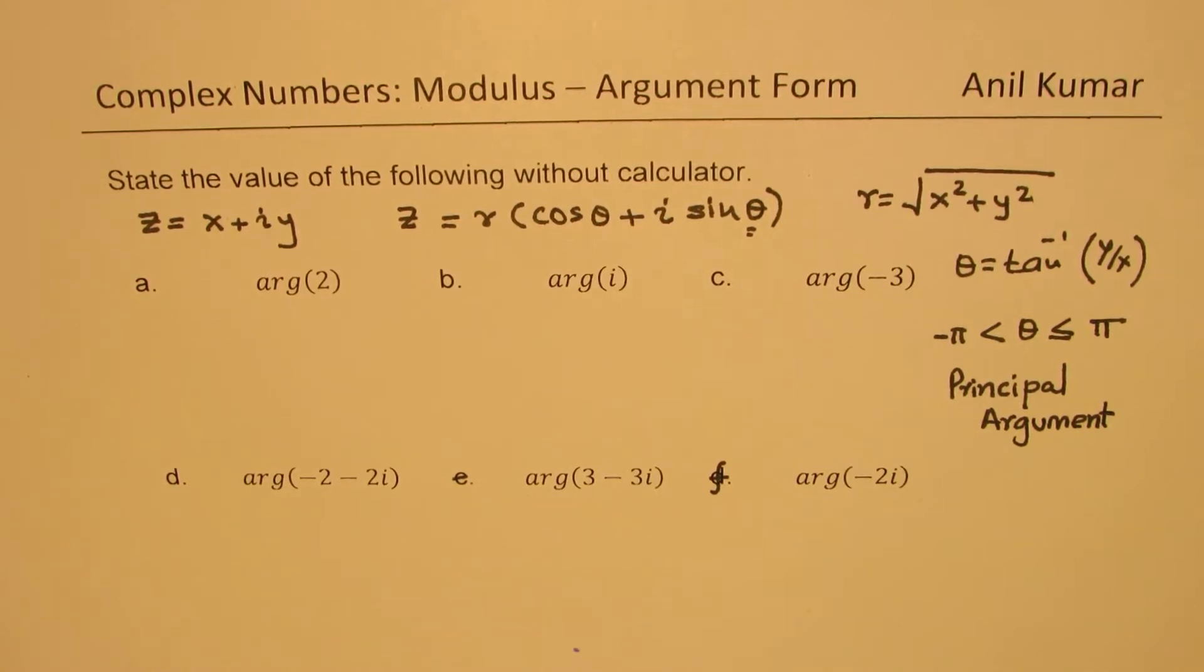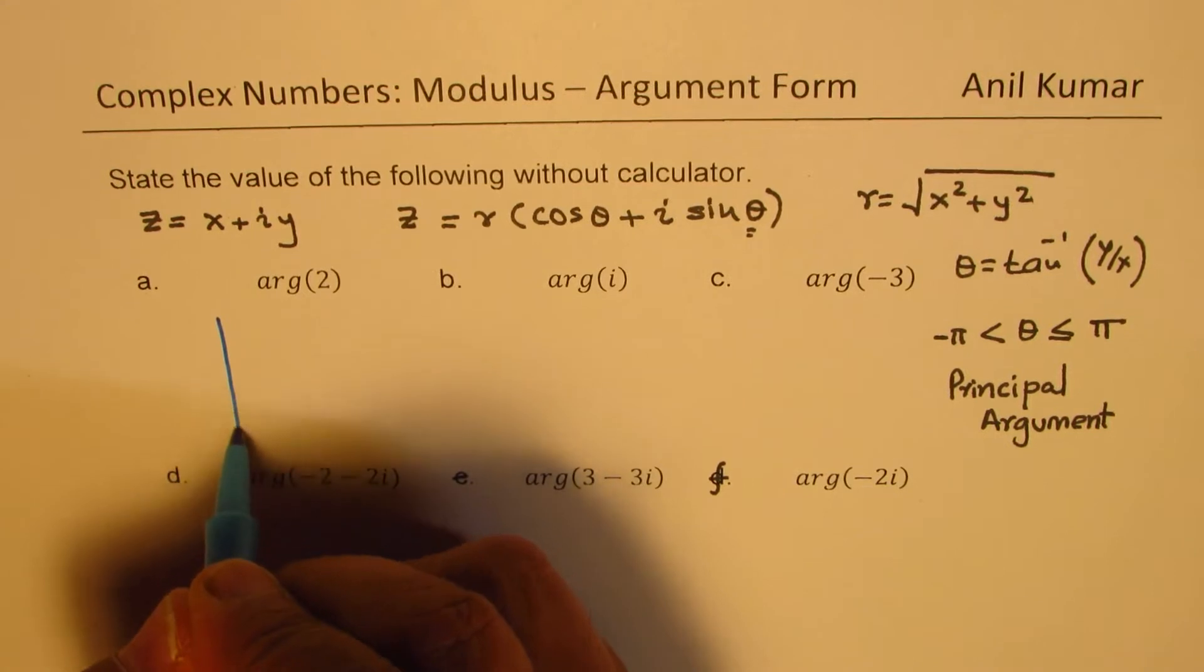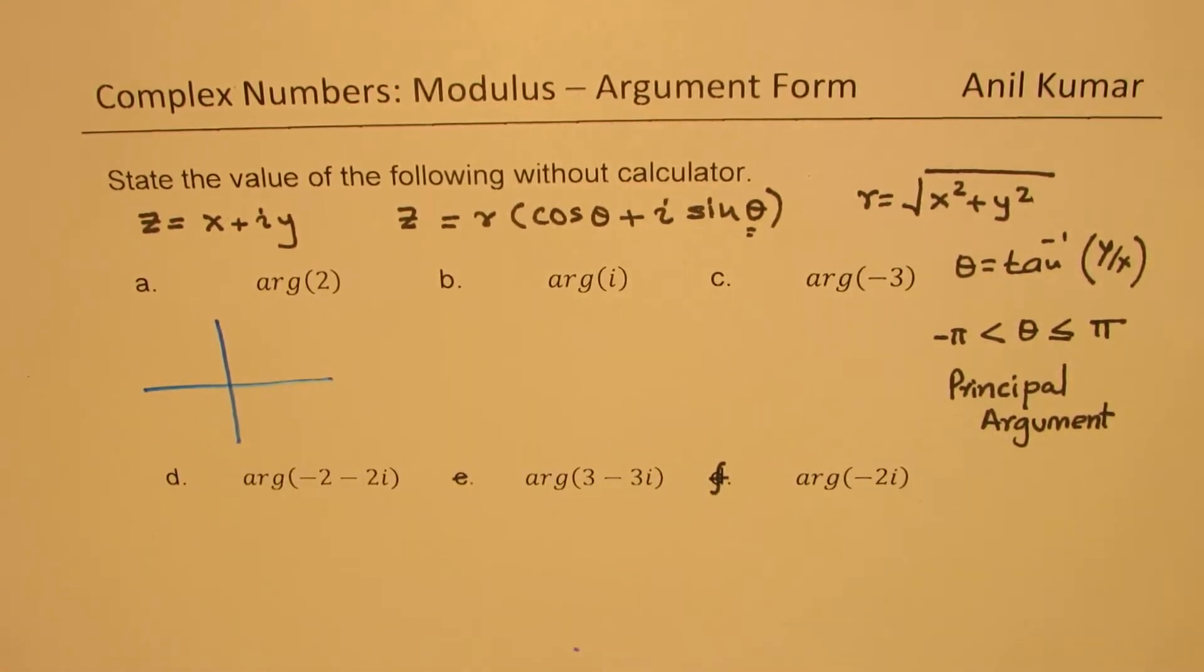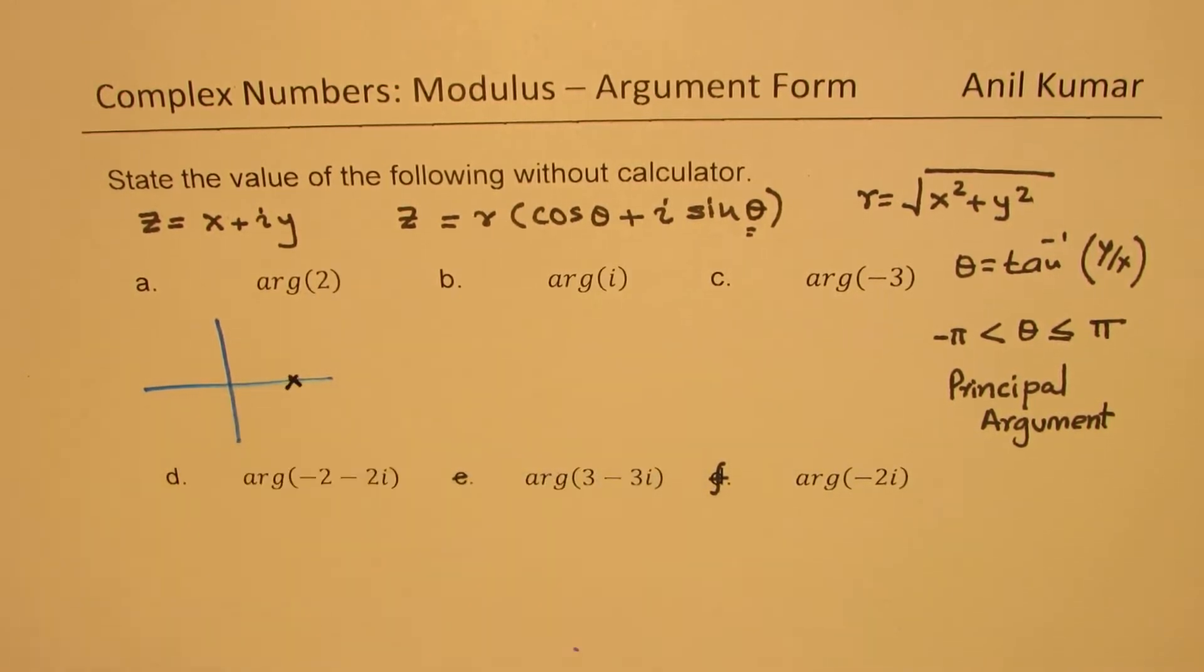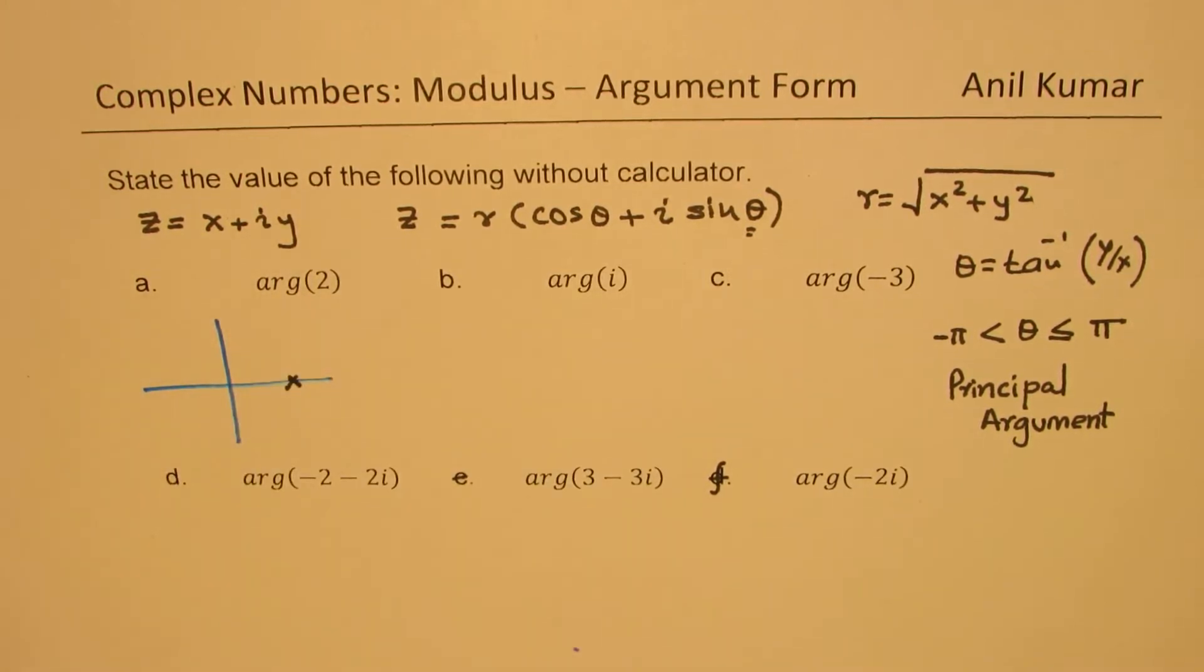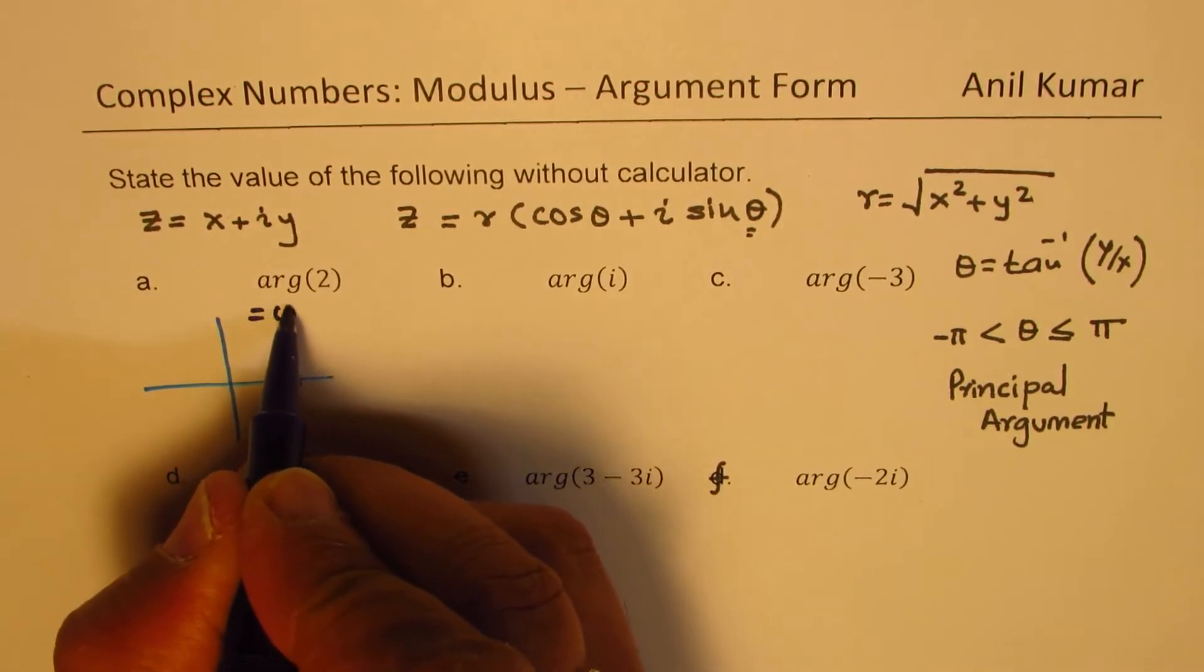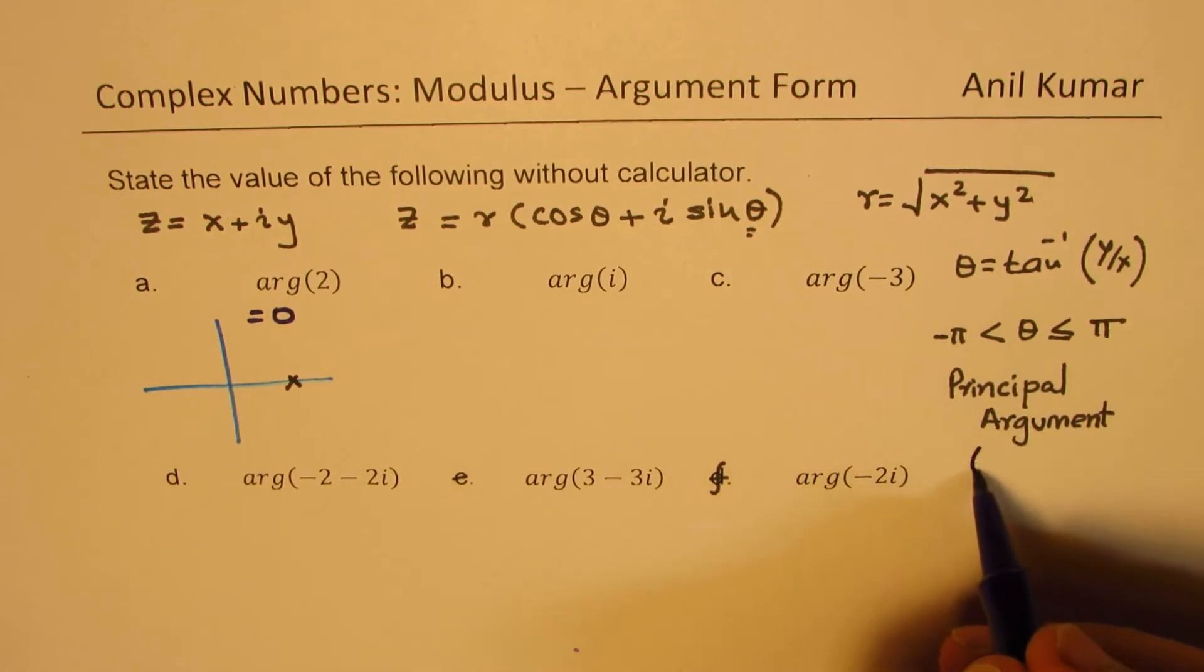Now, with that information, let's begin with finding out what is argument 2. Now when I say argument 2, we are talking about the real part, just 2. So we are talking about something here. Now that means this should be equal to 0. So that should be equal to 0. Now all these are in radians, so all the answers will be in radians.